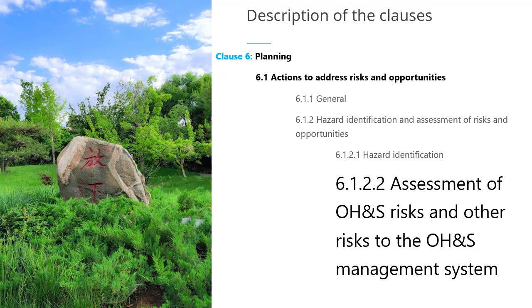Clause 6.1.2.2 requires that the organization shall establish, implement, and maintain a process to assess OHS risks from the identified OHS hazards and other risks which may influence the OHS management system performance. The organization shall need to maintain and retain documented information regarding the methods and criteria it uses to assess the risks.